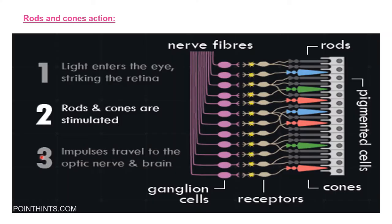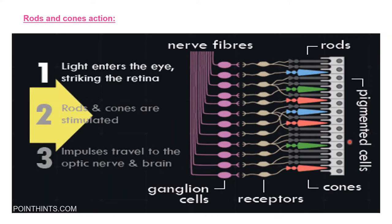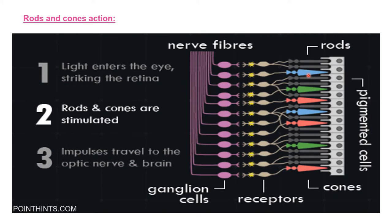When light hits the retina, it stimulates the rods and cones. These rods and cones transmit the light impulse into a nerve impulse into the surrounding cells, then into the optic nerve, then into the brain.